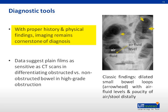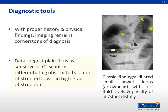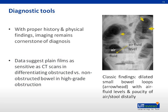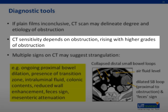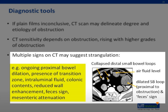In the setting of proper history and physical findings, imaging remains the cornerstone of diagnosis. Laboratory data are generally not specific for diagnosis but can help with management. Classic findings include dilated small bowel loops with air-fluid levels and paucity of air and stool distally, as shown in the x-ray. Some data suggest that plain films, especially in high-grade obstruction, are as sensitive as CT scans in differentiating obstructed versus non-obstructed bowel. If plain films are inconclusive, a CT scan with oral and intravenous contrast may delineate both the degree and the etiology of obstruction. CT scan sensitivity depends on degree of obstruction and increases with higher grades. Multiple signs on a CT scan may suggest strangulation, lowering the threshold for an operation, and these are highlighted here.